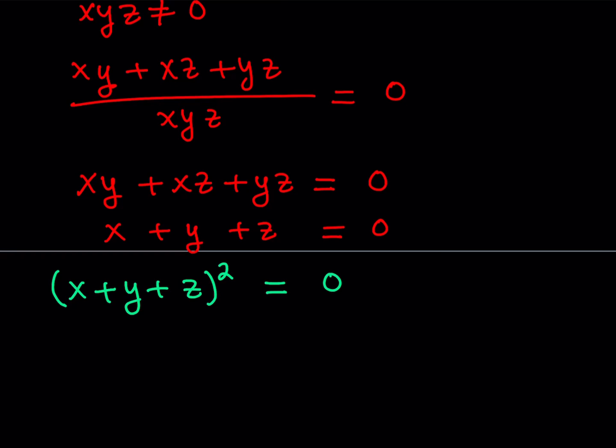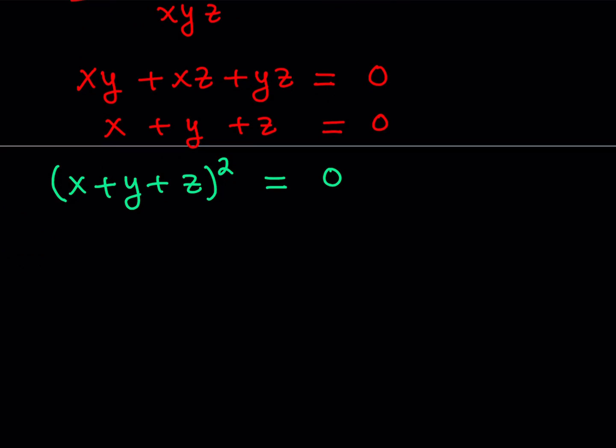What does this give us? Let's go ahead and expand it. There's a formula: x squared plus y squared plus z squared, that's the first part, plus, now we have a 2 outside, and now we're going to have the two-way products: xy plus xz plus yz. And obviously, this is equal to 0.